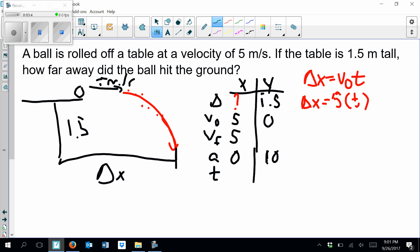So I've got these three variables: Δ, v₀, a, and I'm looking for t. So my best equation there is going to be Δx = v₀t + ½at². I start plugging in: 1.5 = 0 times t. That's helpful. Plus ½ the acceleration, which is 10, and then t².